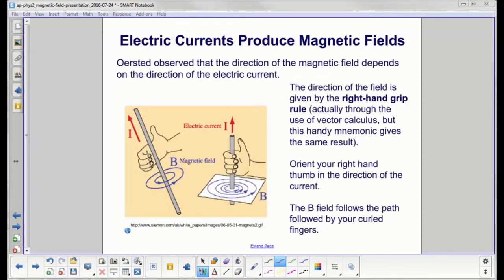Ørsted observed that the direction of the magnetic field depends on the direction of the electric current, because the magnetized needle swung 180 degrees differently depending on which way the current was going. The direction of the magnetic field is given by the right-hand grip rule, also known as right-hand rule number one or the corkscrew rule. Before you think physicists are that funny, it's actually using vector calculus - the cross product or the curl. But that'll have to wait until AP Physics C.